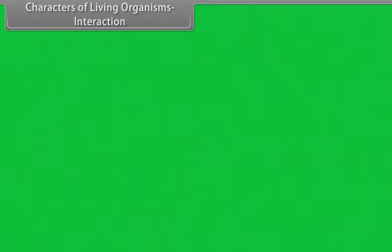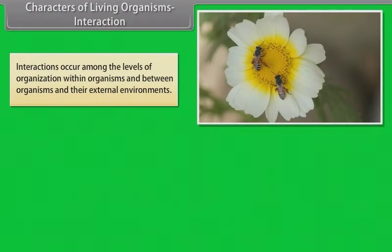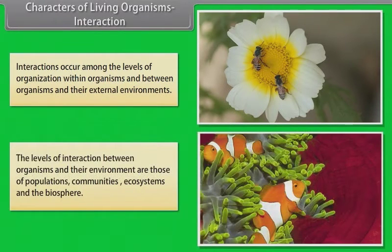Characters of living organisms - Interaction: Interactions occur among the levels of organization within organisms and between organisms and their external environments. The levels of interaction between organisms and their environment are those of populations.